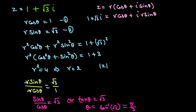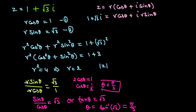We can also verify: since R equals 2, we get 2 cosine theta equals 1, so cosine theta equals 1 over 2, which confirms theta equals pi over 3. Now with R equals 2 and theta equals pi over 3, we plug into the polar form: 1 plus root 3 iota equals 2(cosine(pi/3) plus iota sine(pi/3)).